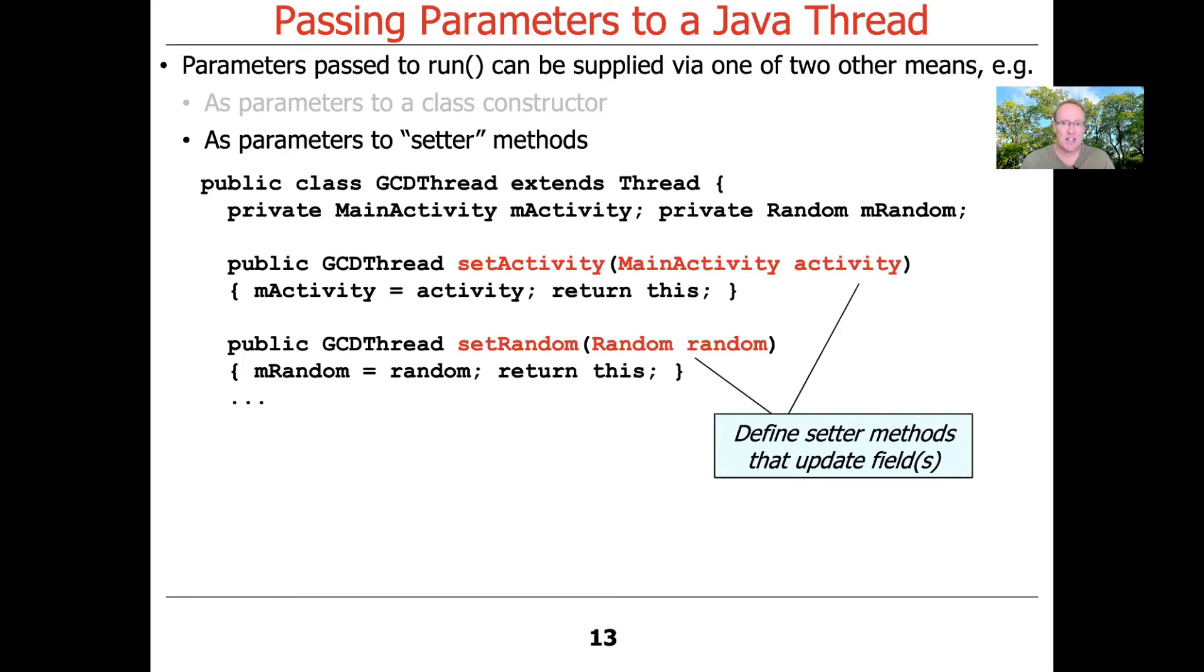So it comes back as a GCD thread. And then we have another method called setRandom, which takes a random and stores that in the field and returns this. So both of these methods return this. In other words, they're returning GCD threads. And we'll see why we do that in a second.